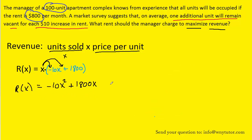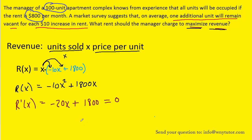Remember, we're trying to maximize the revenue. To do that, we take the derivative of the revenue function. r'(x) becomes negative 20x + 1,800. The next step is to set the derivative equal to 0. Subtracting 1,800 from both sides and dividing by negative 20, we end up with x = 90.